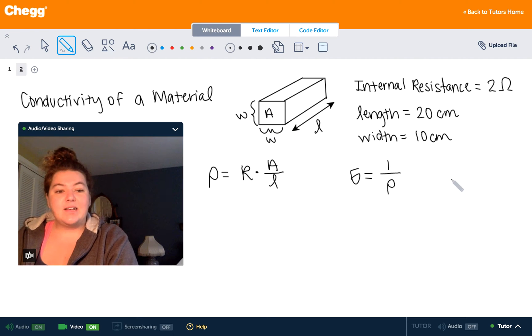But we know that in SI units, our resistance units should be ohms, and that's fine. That's what we have. But our distance units should be in meters. So 20 centimeters is 2 tenths of a meter or 0.2 meters. And likewise, width 10 centimeters is 1 tenth or 0.1 meters.